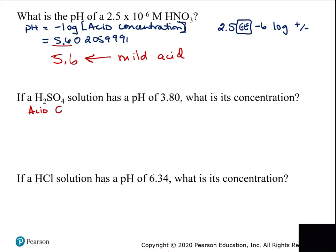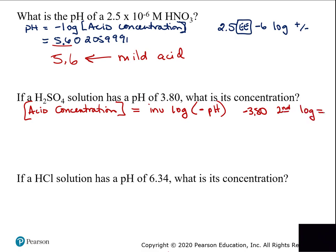The acid concentration equals the inverse log of the negative pH. Enter the pH, make it negative, then hit second and log. For the old calculator: put in negative 3.80, then hit second, then the log button and equals. For a graphing calculator: hit second (or shift/inverse), log, then negative 3.80.